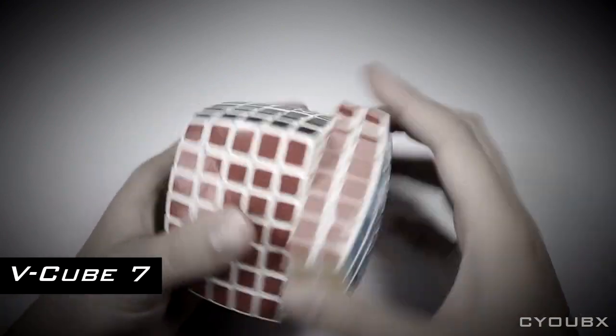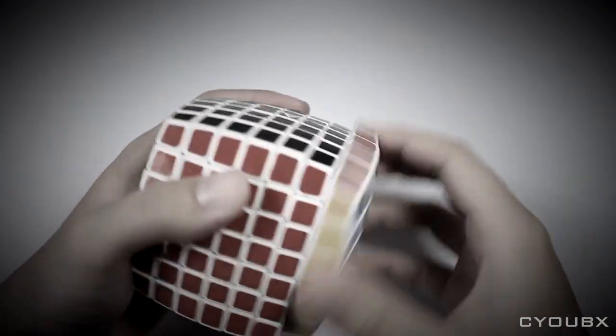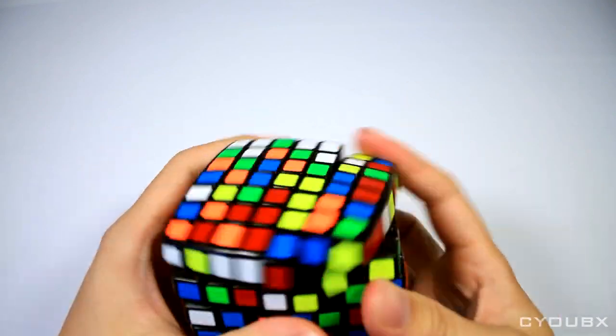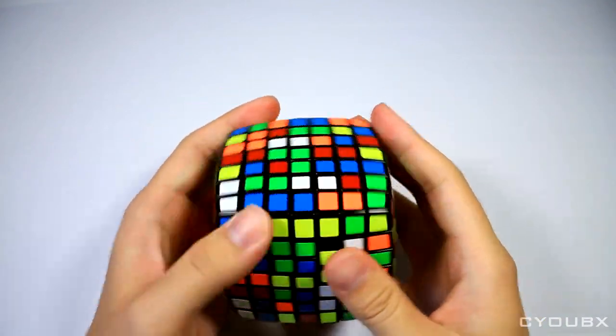Out of the box, the AoFu felt like a broken in V-Cube 7. Turning was somewhat sluggish but crisp. The inner layers were tight, but the rest of the layers seemed to be okay. Catching was a constant problem and I got a few pops as well.